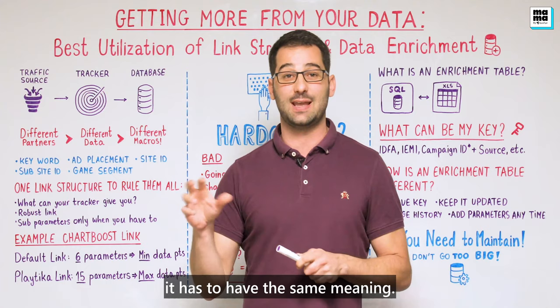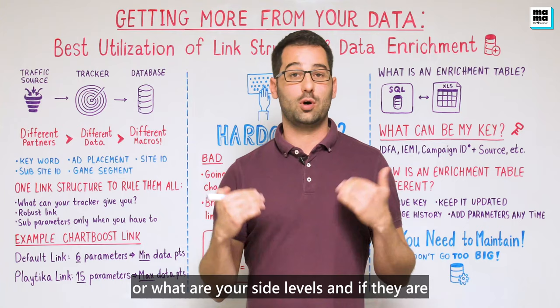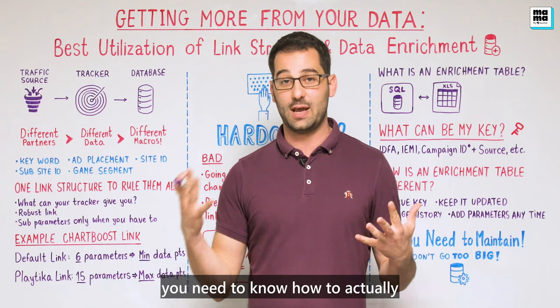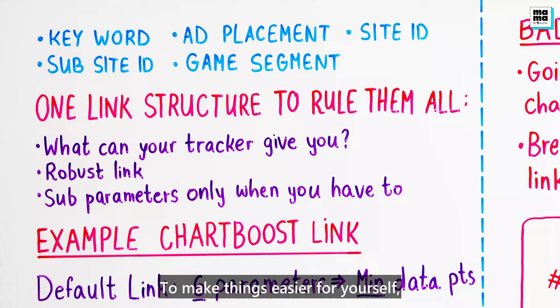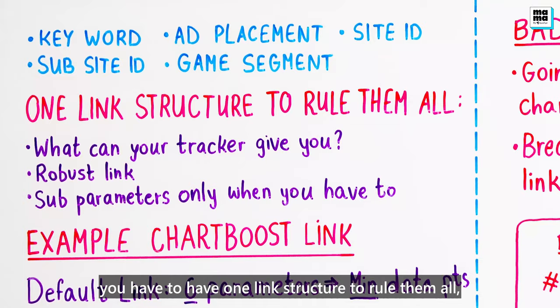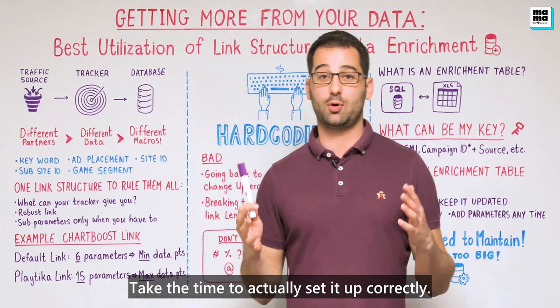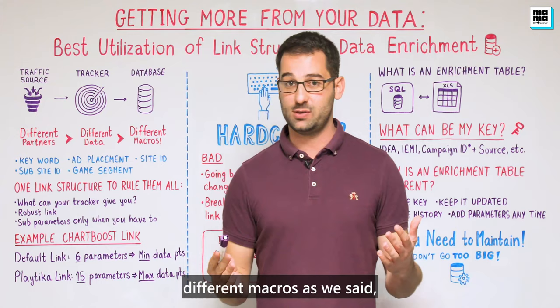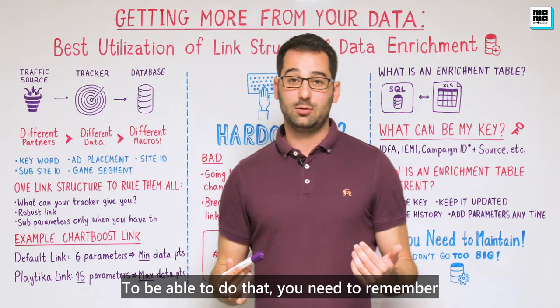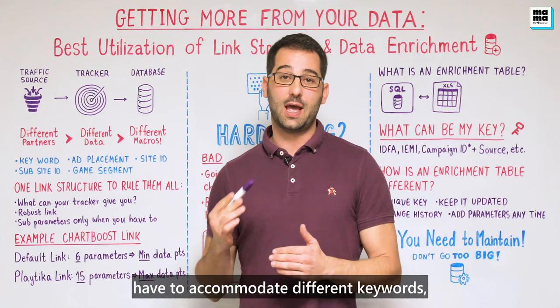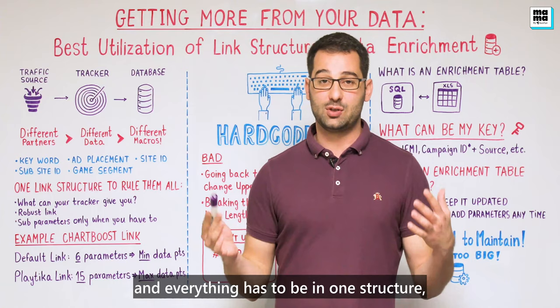You need to understand what your subparameter levels or site levels are, and if there are different games across different partners, you need to know how to put it correctly into the links. To make things easier, you have to have one link structure to rule them all — take the time to set it up correctly. Different partners have different macros, so the structure of the link needs to accommodate all macros: different keywords, different site IDs, different placements — everything in one structure so you don't get them mixed up.